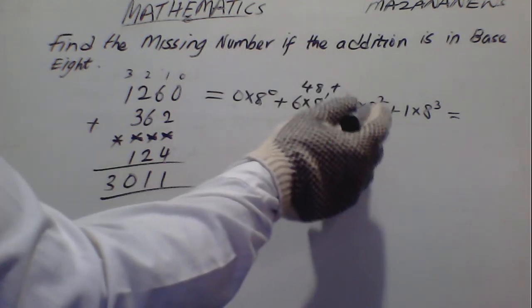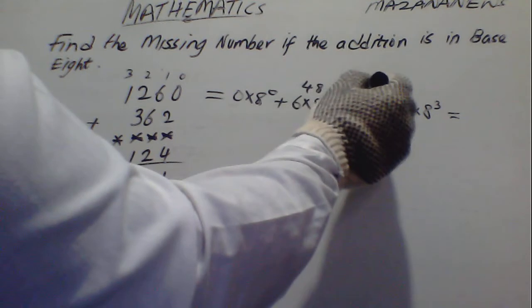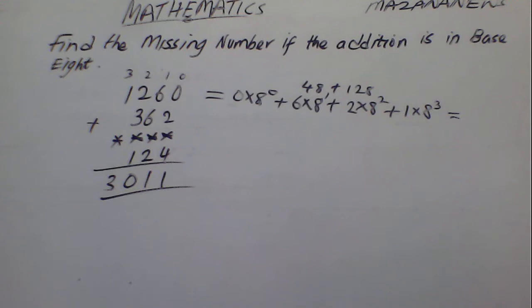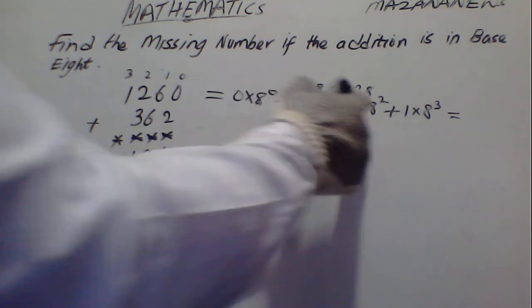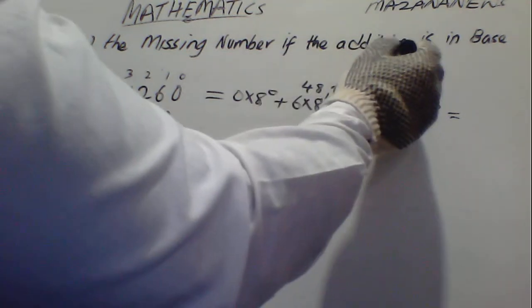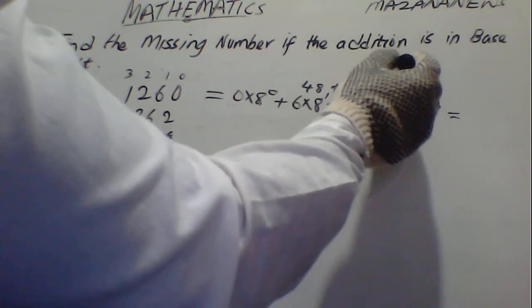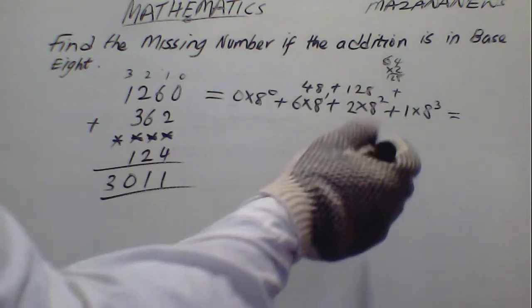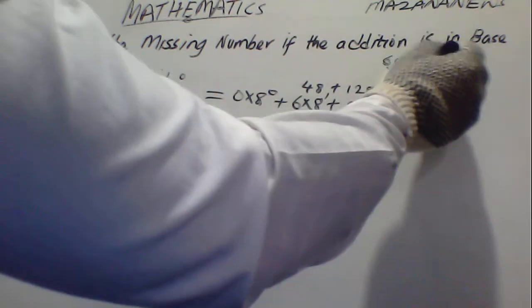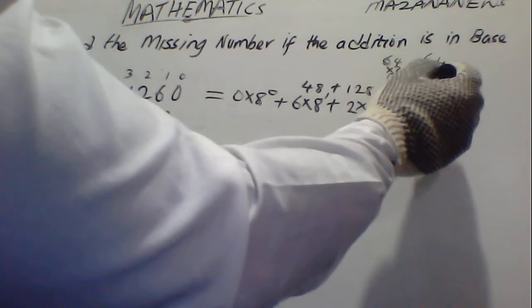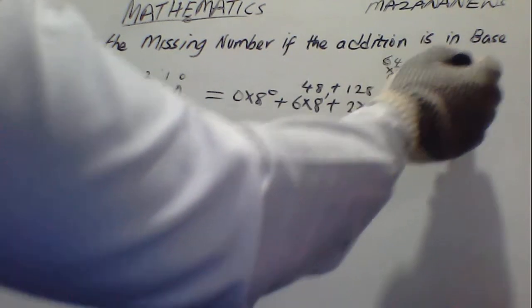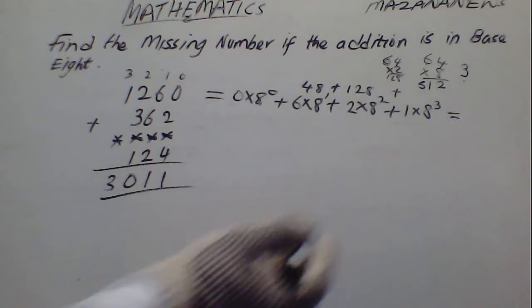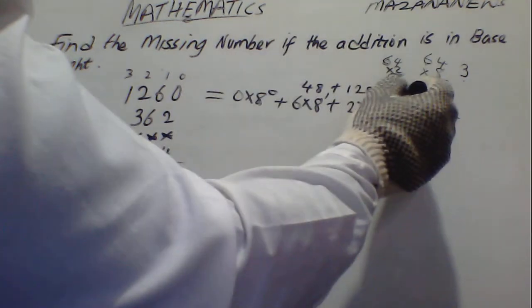Then 64 times 2 gives us 128, and 64 times 8 gives us 512 — carry 3. So 48 plus 3 gives us 51. This gives us 512.